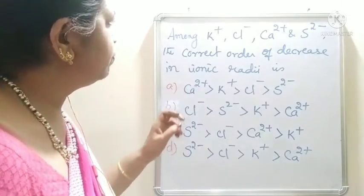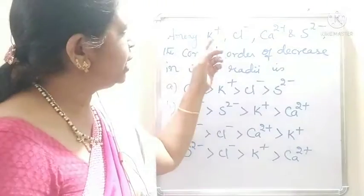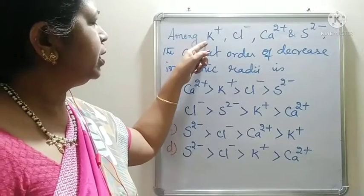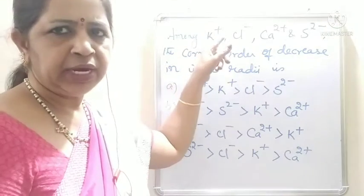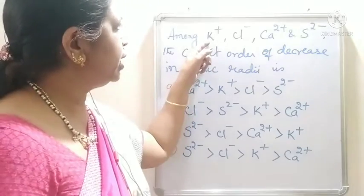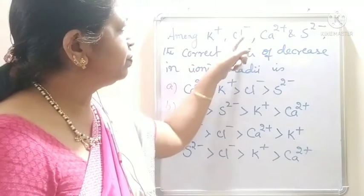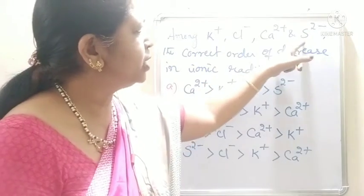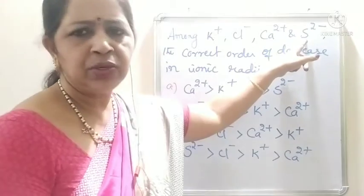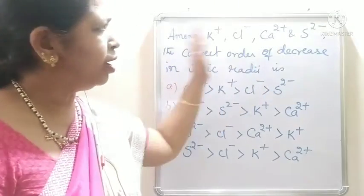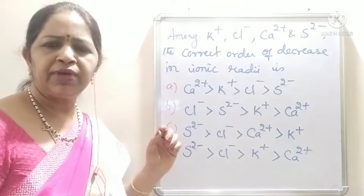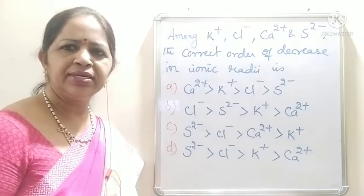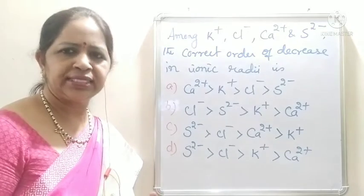First, let us see how many electrons are present in each. K⁺ means 19 minus 1, so it has 18 electrons. Ca²⁺ means 20 minus 2, so 18 electrons. Cl⁻ means 17 plus 1, so 18 electrons. S²⁻ means 16 plus 2, so 18 electrons. All of these have the same number of electrons — 18 electrons. So they belong to an isoelectronic series.